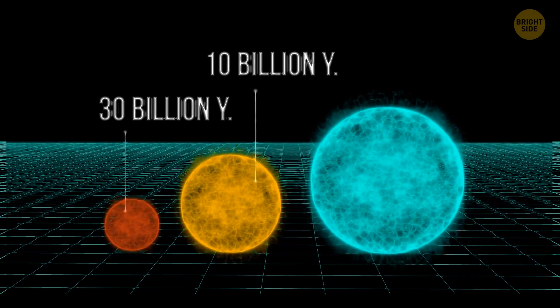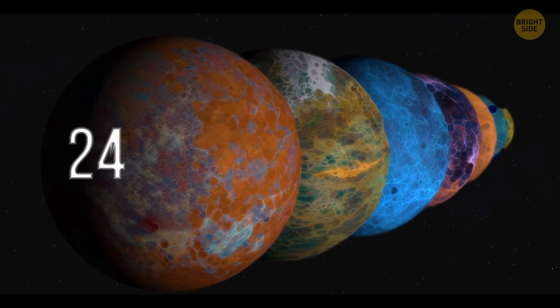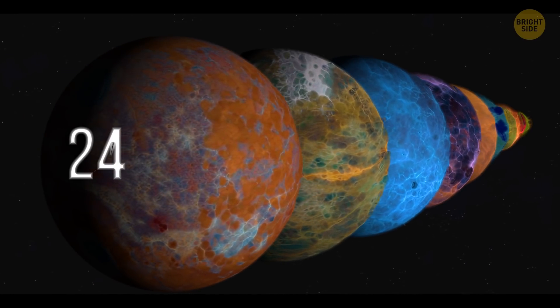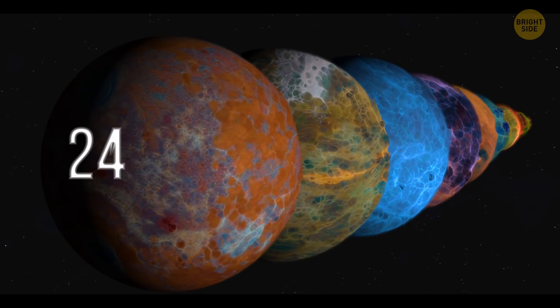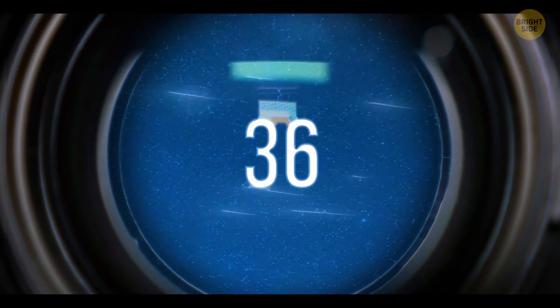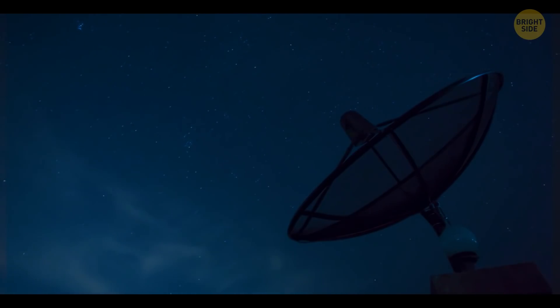So far, scientists have discovered 24 super-abundant planets. But that still doesn't mean that there is life there for real. But some scientists believe that there are already at least 36 advanced civilizations in our galaxy, besides Earth.